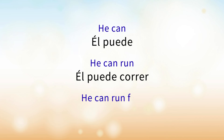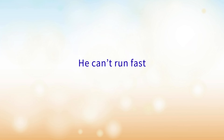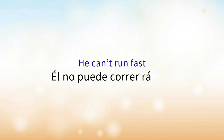And to say 'he can run fast'? Él puede correr rápido. Él puede correr rápido. And how would you say 'he can't run fast'? Él no puede correr rápido. Él no puede correr rápido. When we use the pronoun, the word 'no' goes in between the pronoun and the verb.